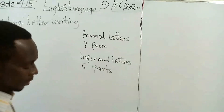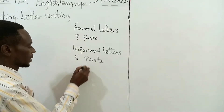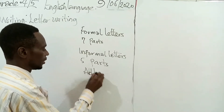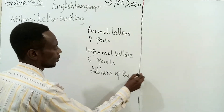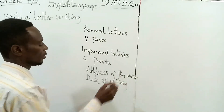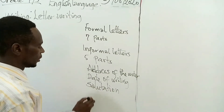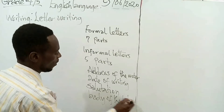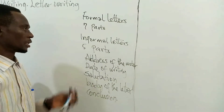Can you remember the parts? The parts are: we have address — address of the writer, the person writing the letter. We have the date — date of writing. We have the salutation. Then the body of the letter. And lastly, the completion. This is the parts of an informal letter.